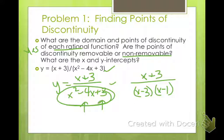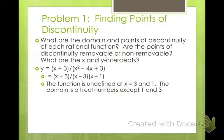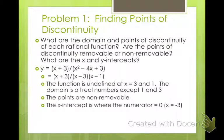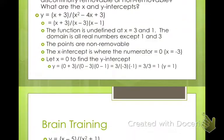For the x and y intercepts: the x intercept is where the numerator equals 0. Since x+3 equals 0 when x equals negative 3, that's your x intercept. For the y intercept, let x equal 0: the numerator gives 0+3 equals 3, and the denominator gives 0 minus 0 plus 3 equals 3. So 3 divided by 3 equals 1 — that's your y intercept.